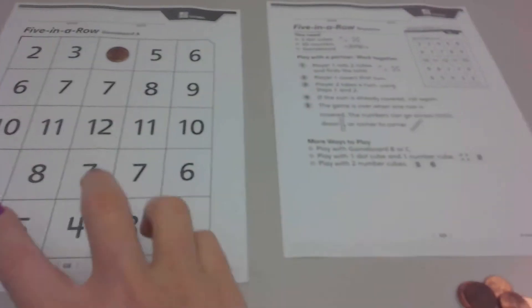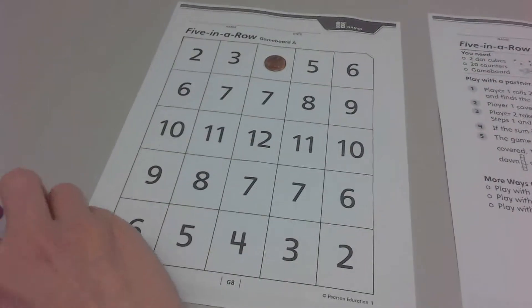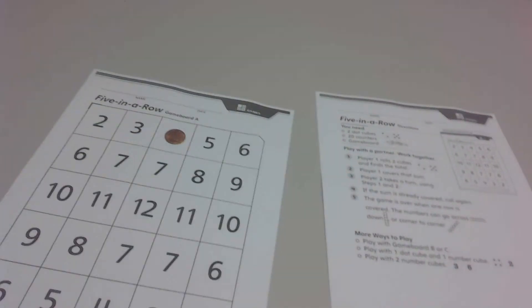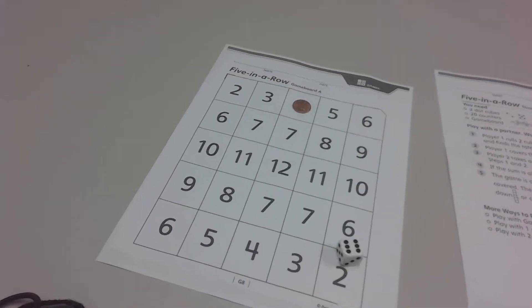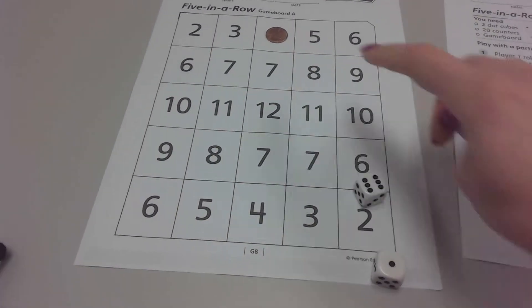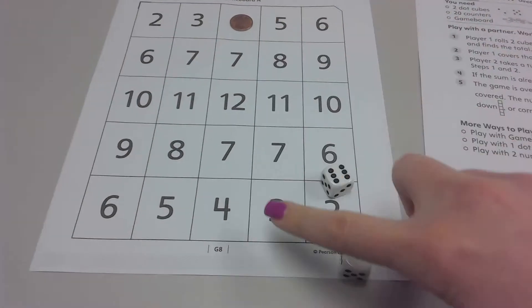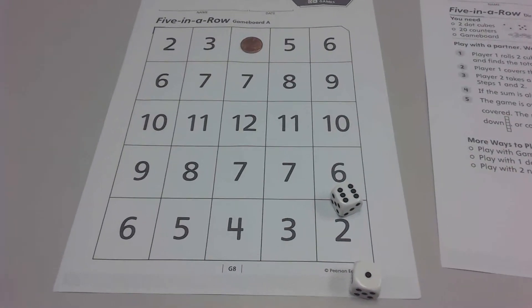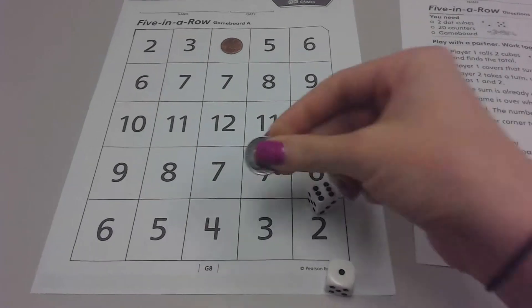Player two goes. Oh, I have a six and a one, what did I get? Seven. Now I can choose to block from my player going down here, or if I want to start my own row. I'm going to be nice today, so I'm going to go here.